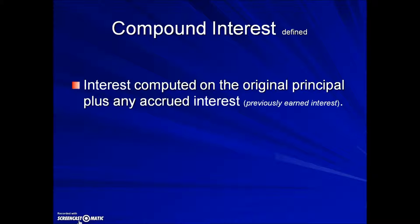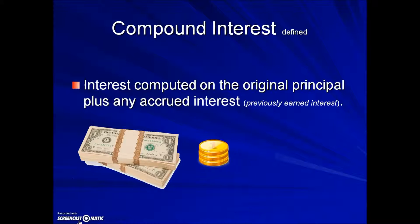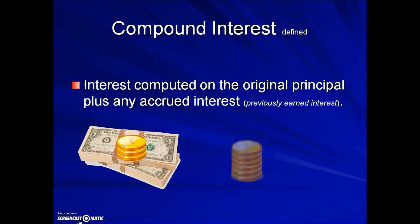By definition, compound interest is interest computed on the original principal plus any accrued or previously earned interest. Here's a graphical illustration: you make a deposit, interest is calculated, and that money is added to the balance. The next time interest is calculated, it's not only on the original deposit but also on the previous interest.